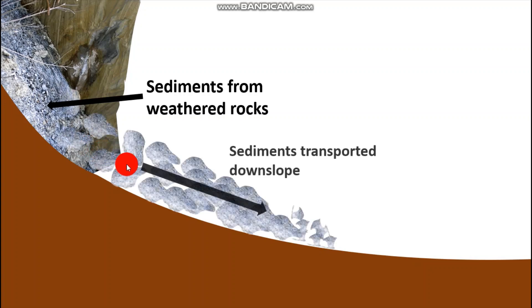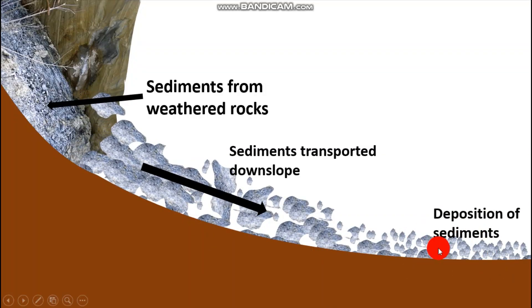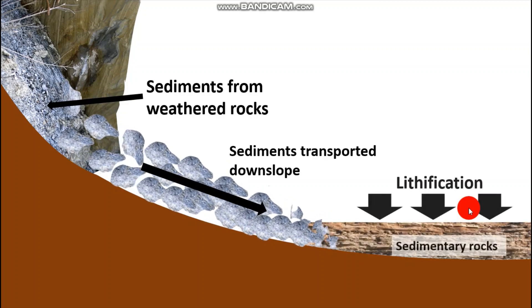When existing rocks are weathered down, those sediments are transported down the slope. As they are transported — either by water, wind, or moving ice — they will be deposited at the lowlands. Because of the weight of the materials, the sediments will undergo the process of lithification. These sediments, once deposited, pile up in layers over time.